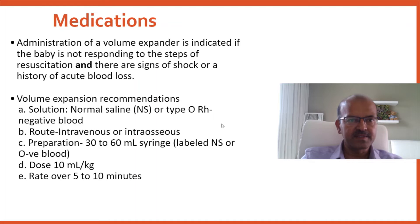Normal saline or type O Rh-negative blood is preferred if there is evidence of blood loss. It can be given intravenously or intraosseously using a 30 or 60 mL syringe. For a term baby at 10 mL per kg, you will need 30 mL. Give it over 5 to 10 minutes as a quick push.